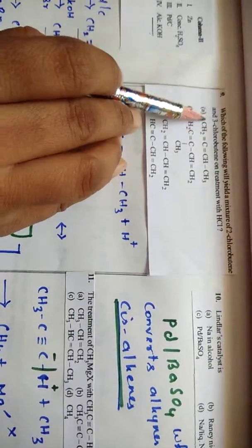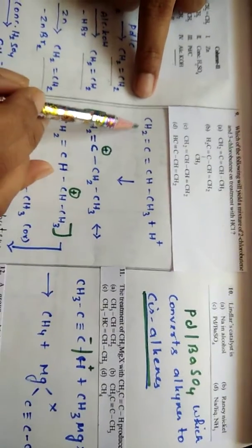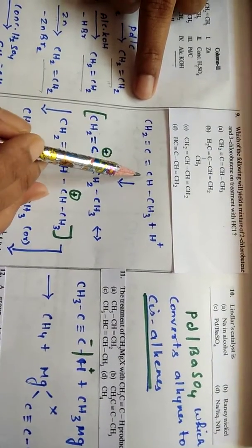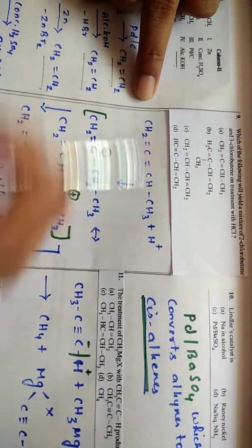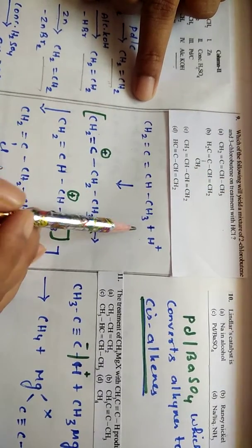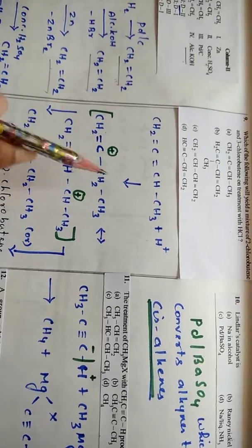9th question: which of the following yields a mixture of 2-chlorobutane and 3-chlorobutane on treatment with HCl? In this, which alkyne gives these 2 products? So here you just take CH2 double bond C double bond CH single bond CH3. Take option A here.